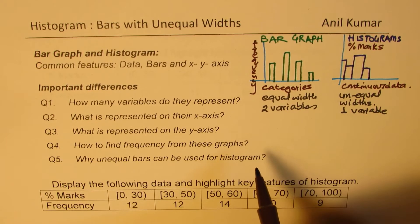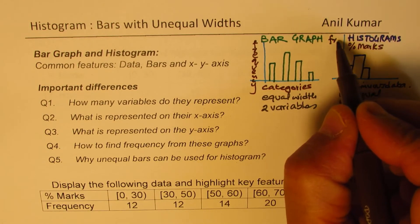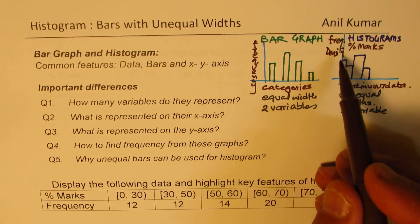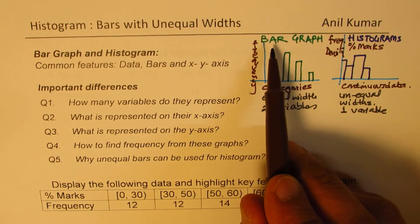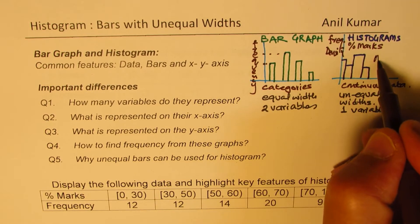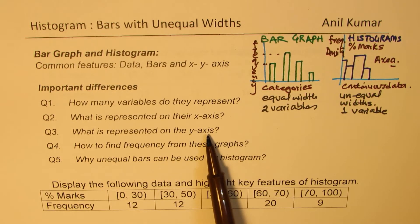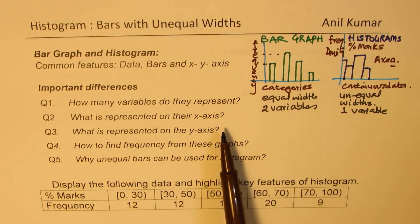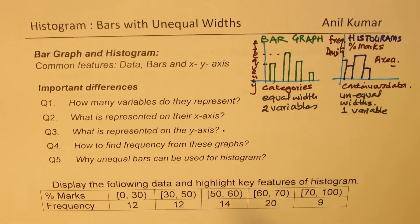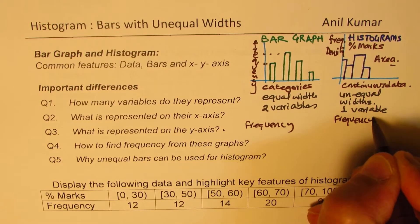In the case of histograms, since we allow the width to be different, we actually have frequency density on the y-axis. For bars of the same width we could say this is also frequency. However, in a bar graph the number of items can be read directly from the frequency, whereas in a histogram it is the area we are looking at. So the bar graph has frequency on the y-axis, while the histogram has frequency density — that is a huge difference.